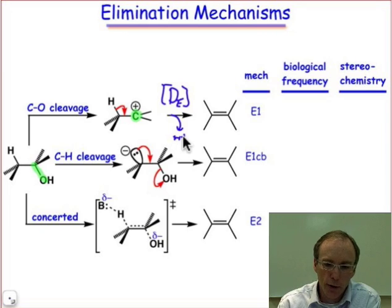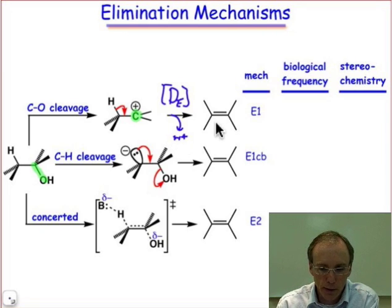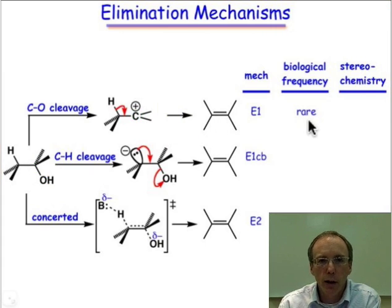H+ is the electrophile that leaves in order to create the carbon-carbon double bond. It turns out that the E1 mechanism is relatively rare in biological systems.